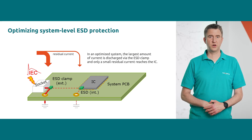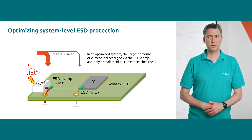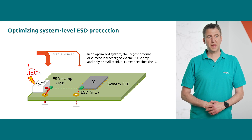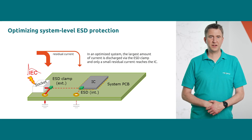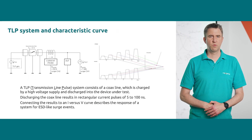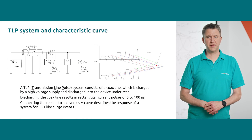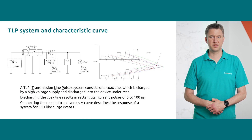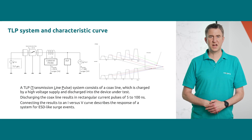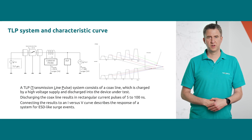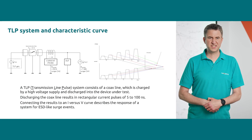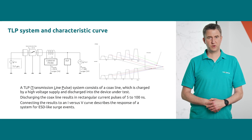In case this data is not available from the manufacturer of the IC, it can be measured by using TLP. Applying TLP pulses to an IC will show the characteristics of its internal ESD protection. To identify the failure level of other sensitive parts — that means the minimum pulse level that is harmful for example for an input — functional tests after each applied pulse are required.